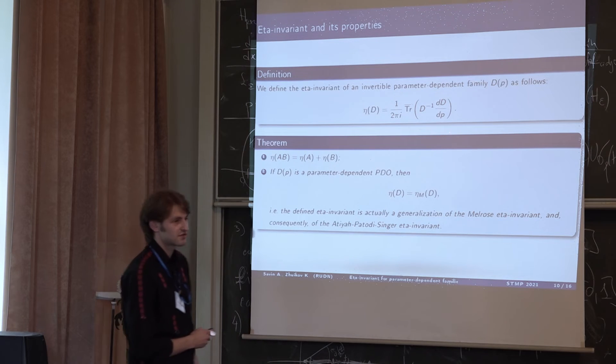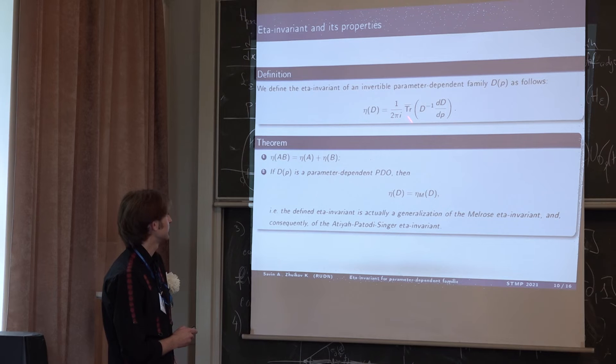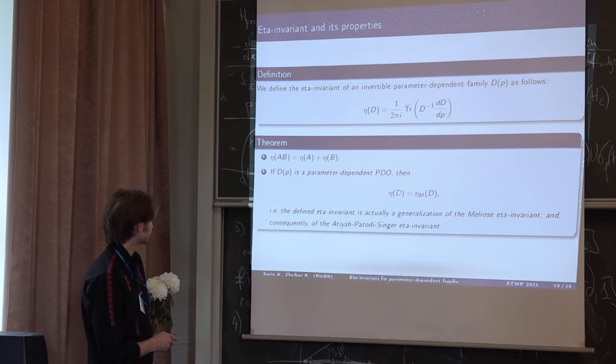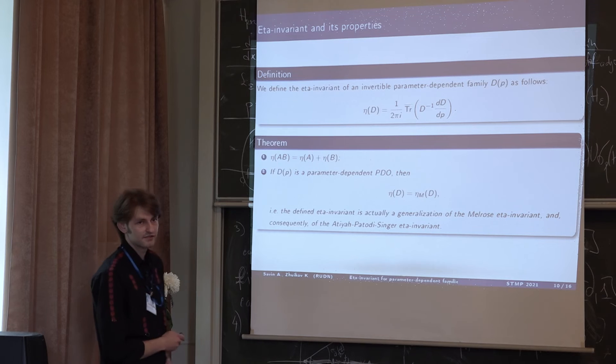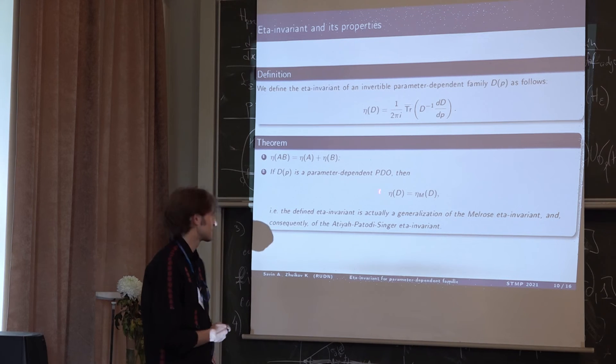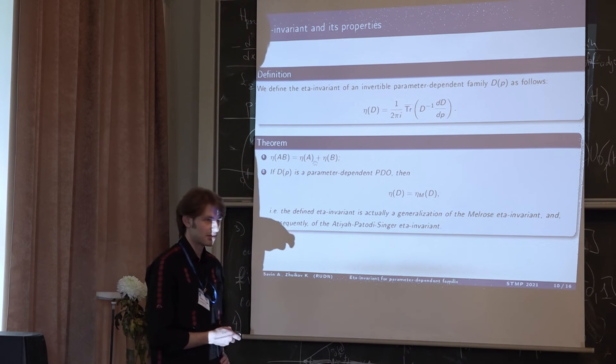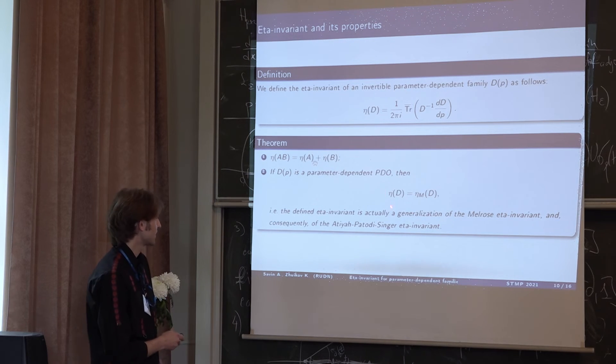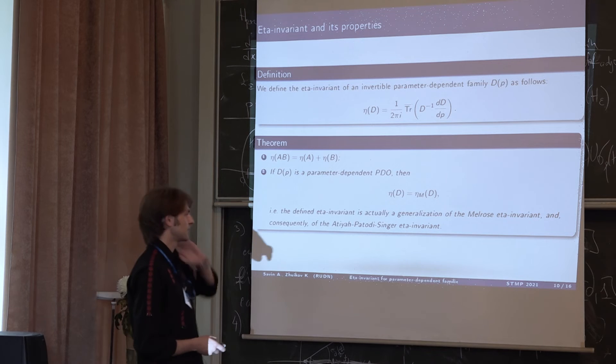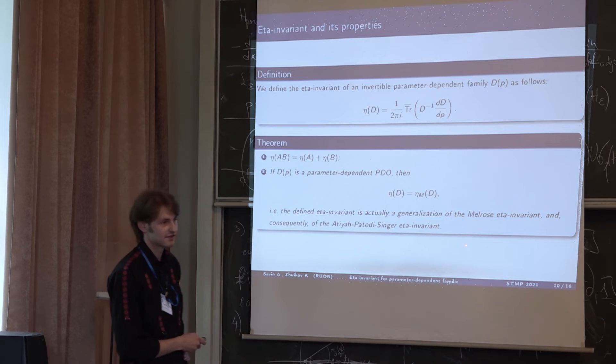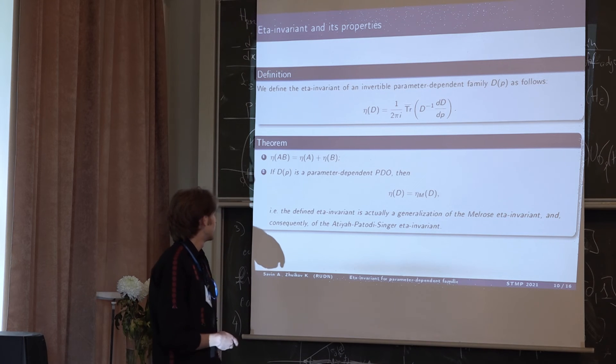The formula is just like Melrose one. We take the inverse and we take the derivative by the parameter P and these are the main results about the eta invariant. First of all, it satisfies the logarithmic property. So eta invariant of a composition of two operators is sum of eta invariants. And if D of P is just a parameter dependent PDO, just like in Melrose case, our eta invariants coincide. Just like that, we obtained the generalization of Melrose's eta invariant and consequently Atiyah-Patodi-Singer eta invariant.